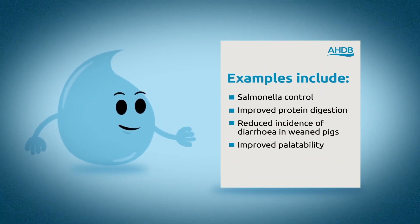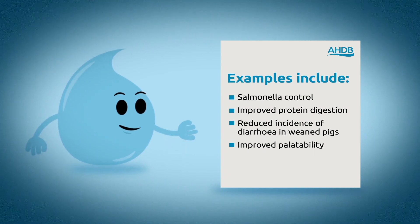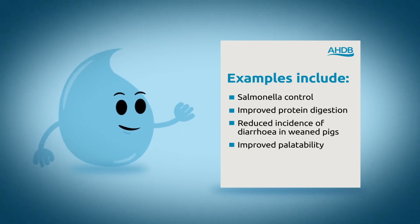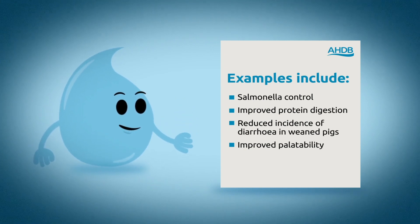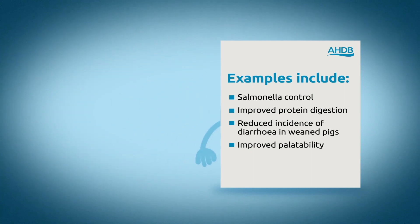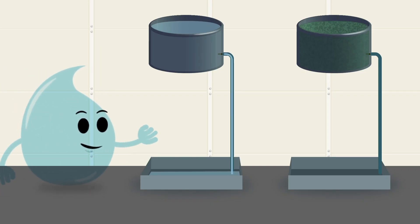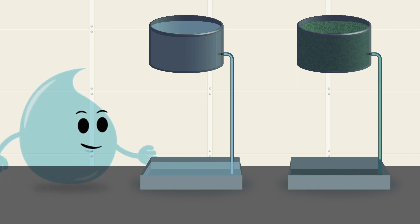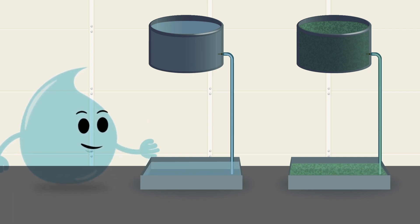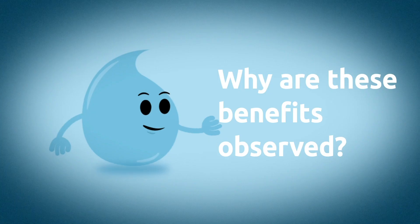Some examples include Salmonella control, improved protein digestion, reduced incidence of diarrhoea in weaned pigs, and improved palatability. If you are only using organic acids for the associated health benefits, it's important to make sure your water system is clean before including them.